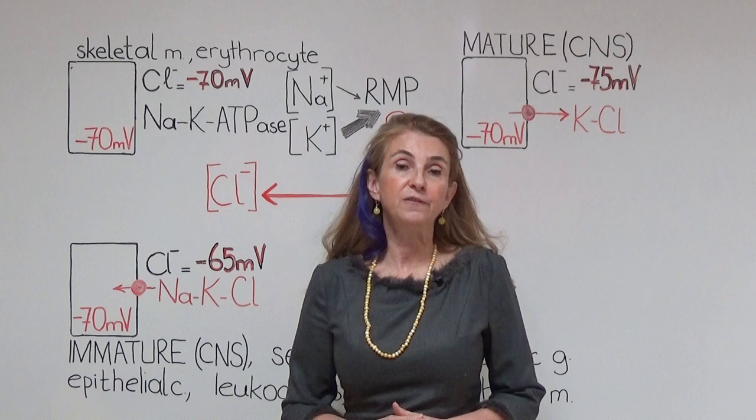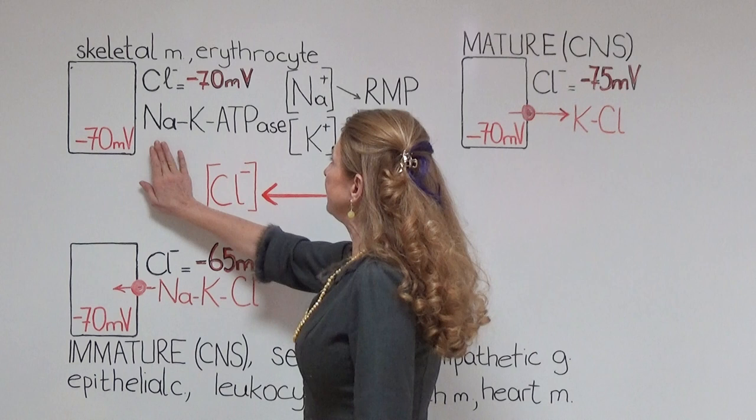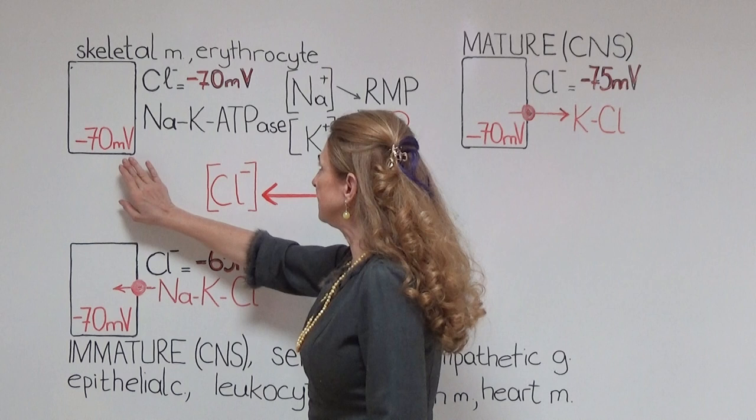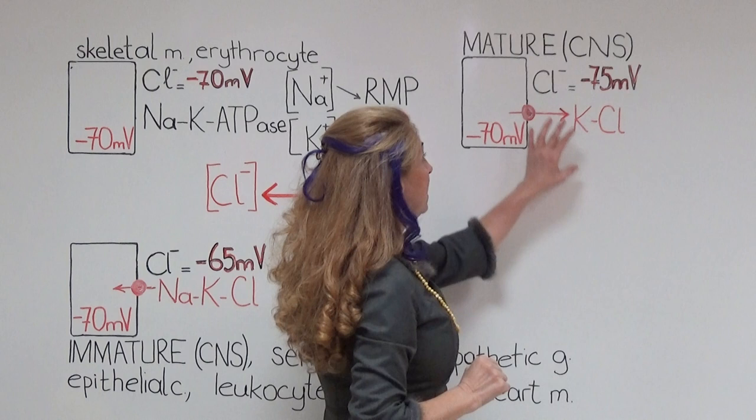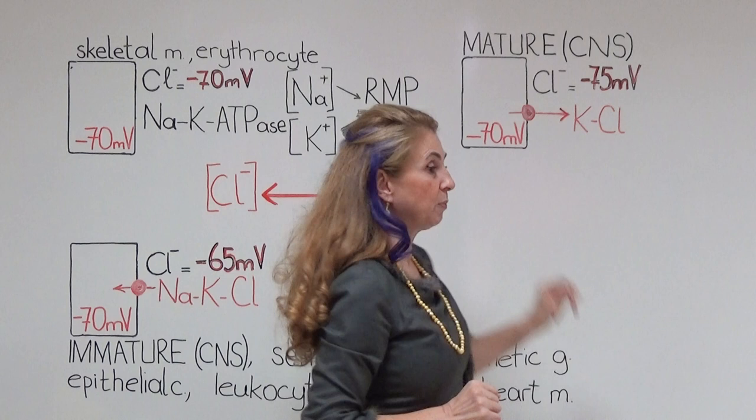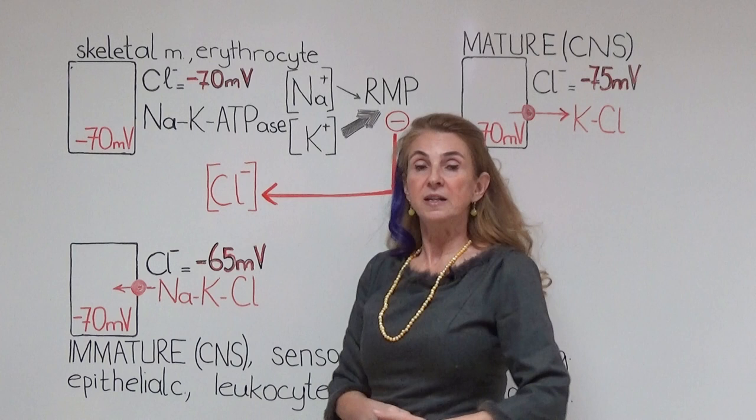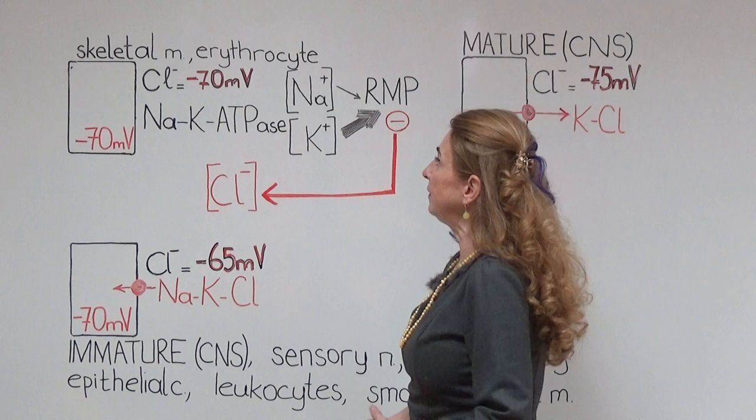This is explained by scientists in three different groups of cells through three different mechanisms. In the first group of cells, the Nernst potential of chloride is equal to the resting membrane potential — minus 70 millivolts in this example. In the second group, the Nernst potential of chloride is more negative compared to the resting membrane potential. And in the third group, the Nernst potential of chloride is less negative compared to the resting membrane potential.